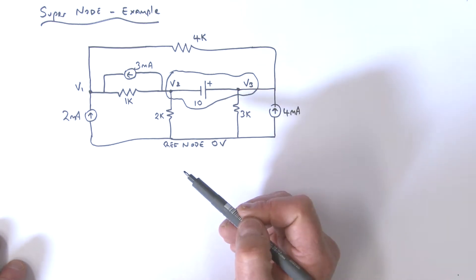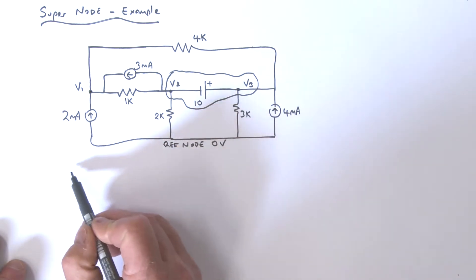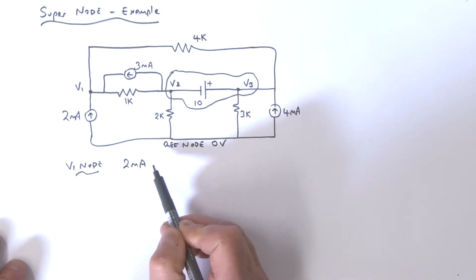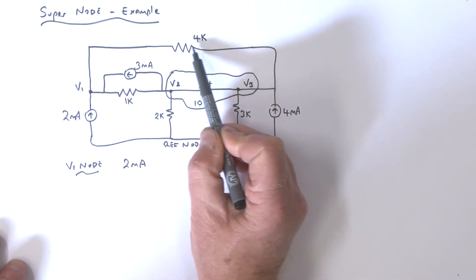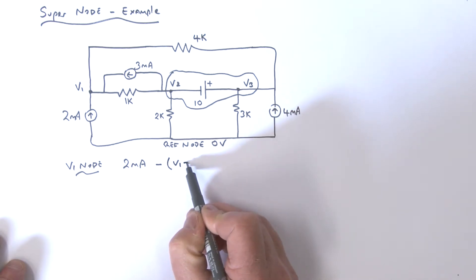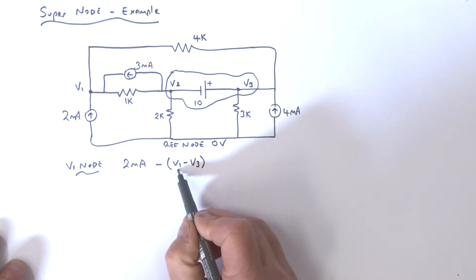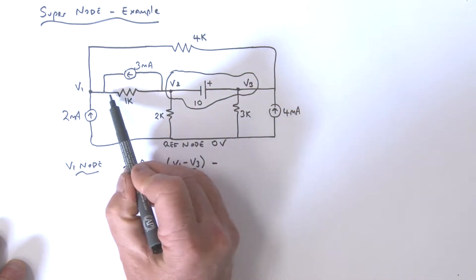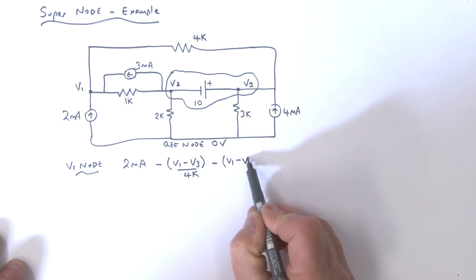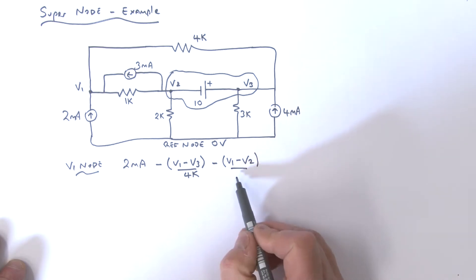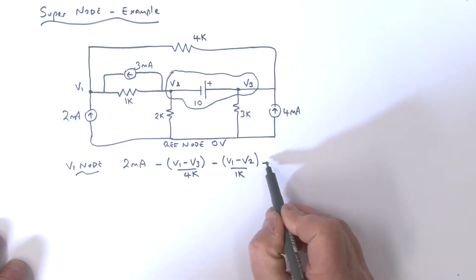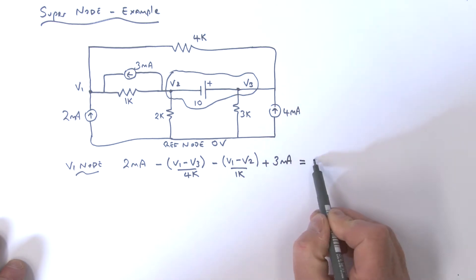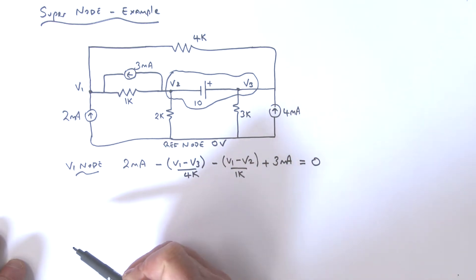We're going to sum currents starting at the v1 node. We've got two milliamps coming in. Then there's a current going out: minus (v1 minus v3) divided by 4k. The current in the next branch, defined going this way, is minus (v1 minus v2) divided by 1k. Then we've got 3 milliamps coming in. All of that equals zero — that's the first node equation.